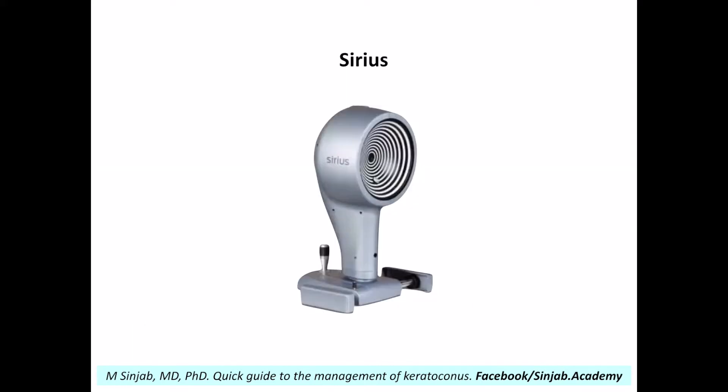In the CIRUS, the thing is a bit different. In the CIRUS, there is only one Scheimpflug camera, and there is a Placido disk. Many studies were done to compare the CIRUS with the other two machines, and those studies concluded that the data were not interchangeable between the CIRUS and the other two machines, especially in the elevation maps.